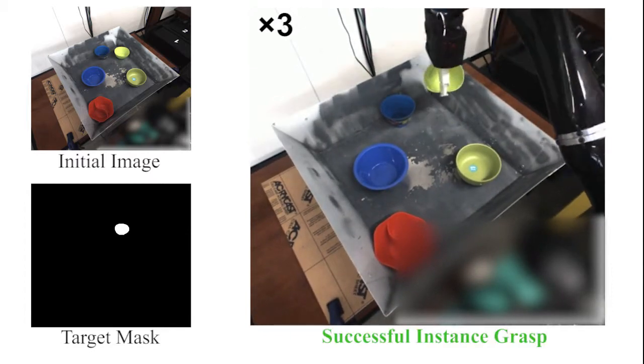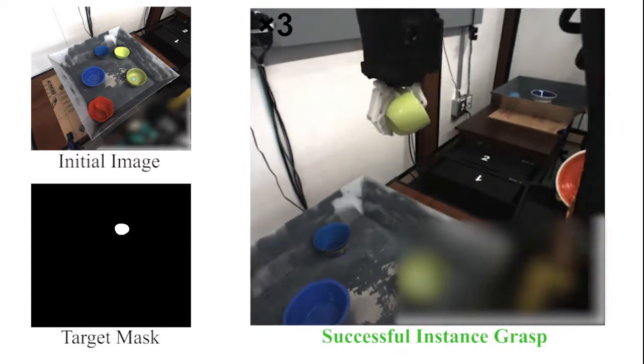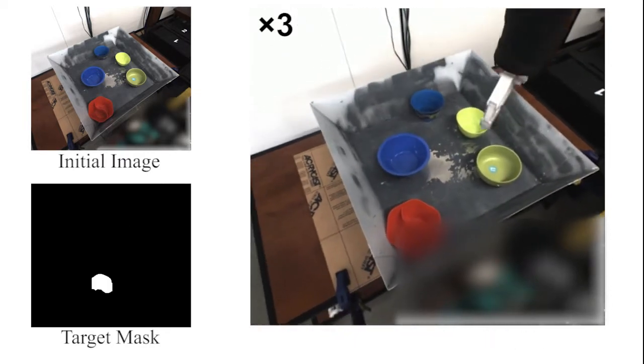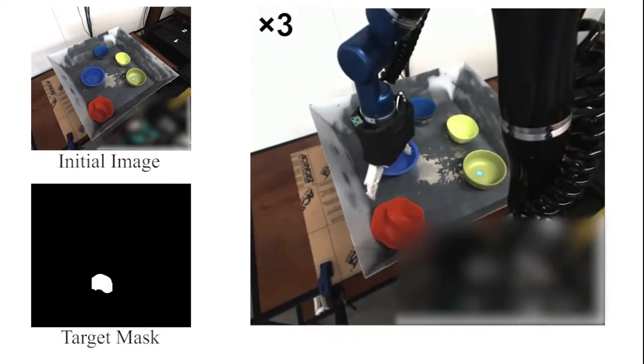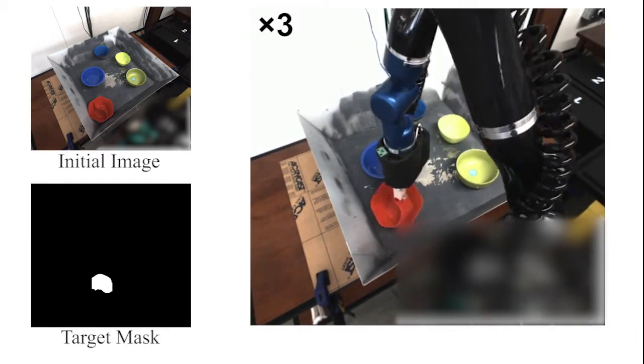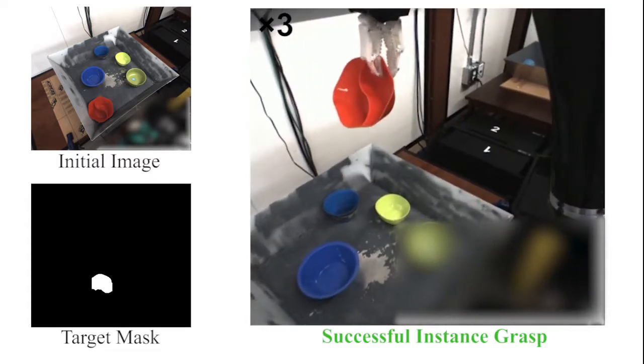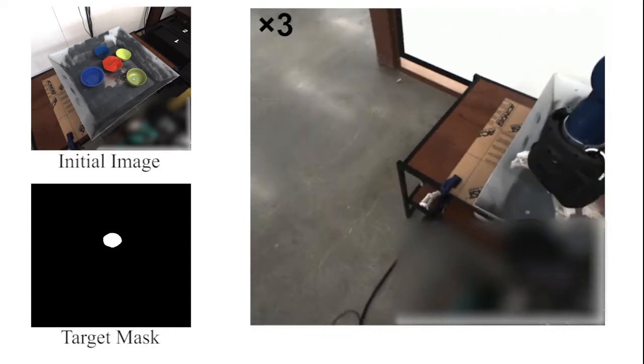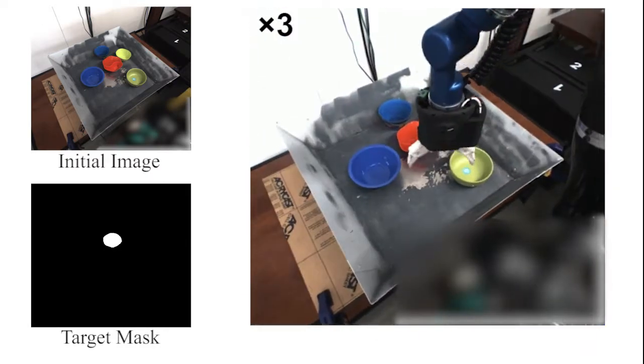At the beginning of each episode, an initial RGB image of the scene is taken from a monocular camera mounted on the robot pan-tilt, and the target object is specified by a binary mask. The goal is to successfully grasp the target object, given the initial image, the target mask, and the current image at each time step.